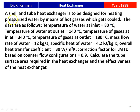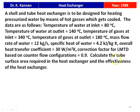The next question is from 1988. A shell and tube heat exchanger is to be designed for heating pressurized water by means of hot gases which get cooled. Temperature of water at inlet: 80°C; outlet: 140°C. Temperature of gases at inlet: 340°C; outlet: 180°C. Mass flow rate of water: 12 kg/s. Specific heat of water: 4.2 kJ/kg·K. Overall heat transfer coefficient: 30 W/m²K. Correction factor for LMTD based on counter flow configuration: 0.9. Calculate the tube surface area and the effectiveness of the heat exchanger.